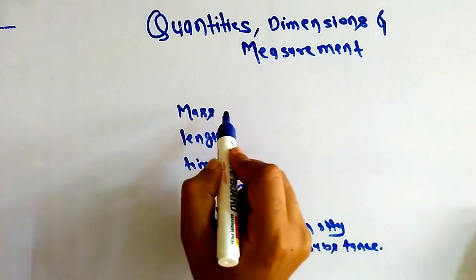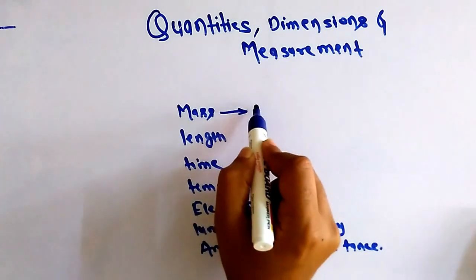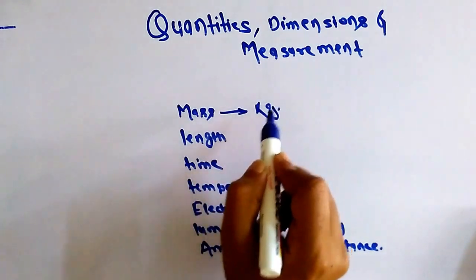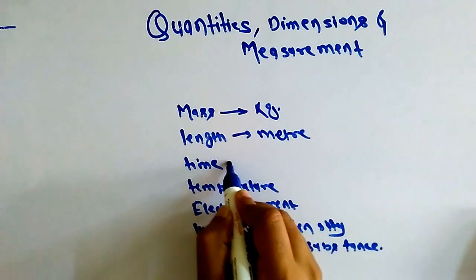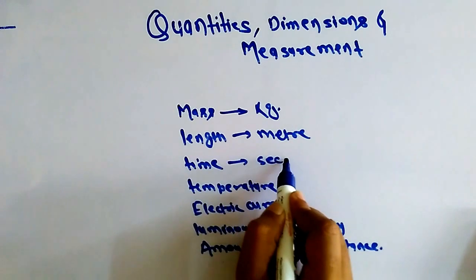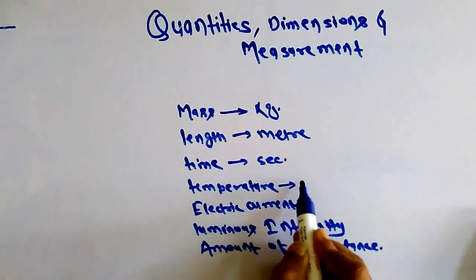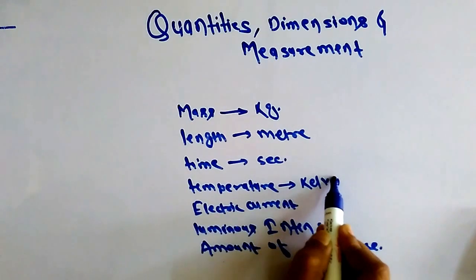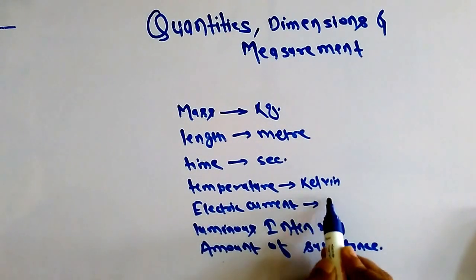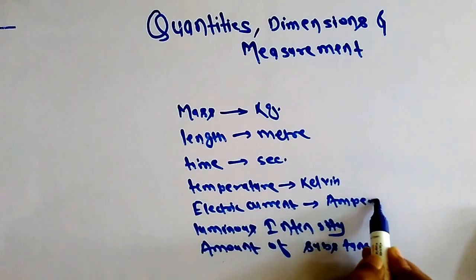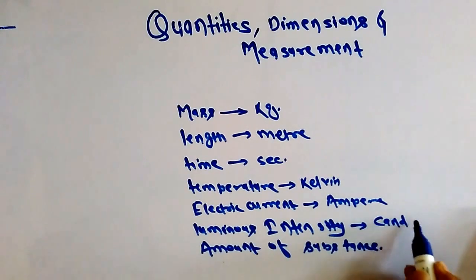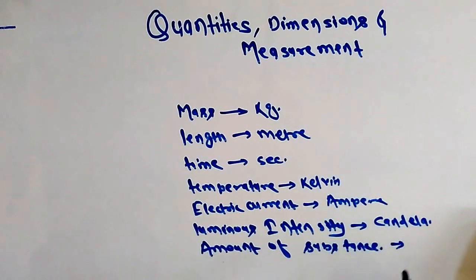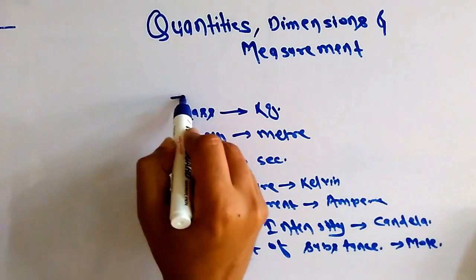Mass has the SI unit kilogram. Length has the SI unit meter. Time has the SI unit second. Temperature has the SI unit Kelvin. Electric current has the SI unit ampere. Luminous intensity has the SI unit candela. And the amount of substance — its SI unit is mole. These are the seven fundamental quantities and their SI units.